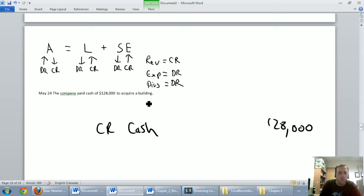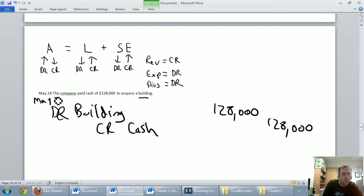Debit. Well, what did we buy? We bought a building. A building is an asset. It's an asset that's going up now. We have more buildings today than we had yesterday. Let's debit building for $128,000. Barely have room to date this. It's May the 24th. And again, the description would be purchased a building for cash. Let's carry on.